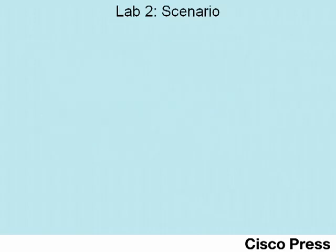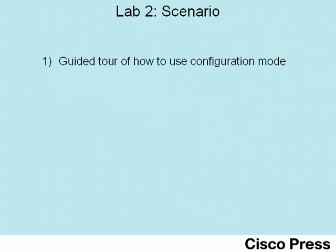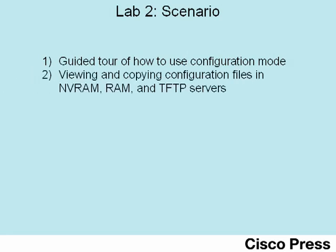The scenario for Lab 2 uses two basic steps. In the first step, you'll see a guided tour of how to get into configuration mode, navigate around different configuration modes, and recognize the prompts in those different configuration modes. In the second step, you'll see how to view and copy configuration files between RAM, NVRAM, and TFTP.